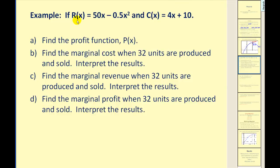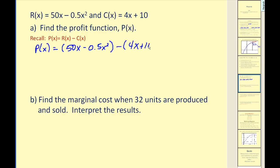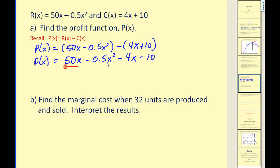Let's put it into practice. Given our revenue and cost functions, we want to find the profit function, marginal cost, marginal revenue, and marginal profit. To find the profit function, we take the revenue function and subtract the cost function, clear our parentheses, and combine like terms to get our final profit function.